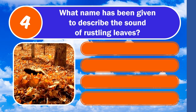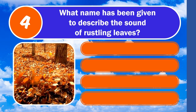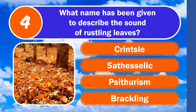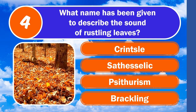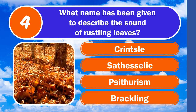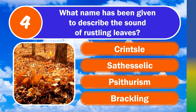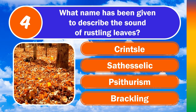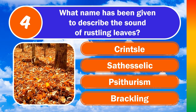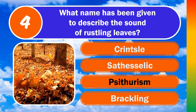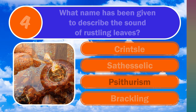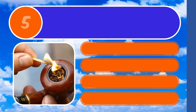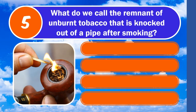Question four: what name has been given to describe the sound of rustling leaves? Is it Krinsel, Sathacellic, Sytherism, or Brackling? The answer is sytherism.